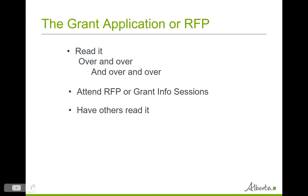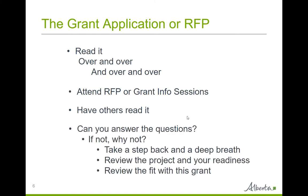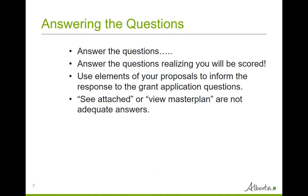Another strategy is, once you've written a draft, get someone else to proofread it and give feedback. Can you answer the question in the grant application form or RFP? If not, why not? Take a step back and a deep breath. Review the project and your readiness. Review the fit with this grant. Grant writers can use elements of their proposals they prepared earlier to apply for grants. Make sure to always operate under the assumption the funder knows nothing about your organization or project or initiative. Don't make them hunt for the information — this is truly annoying for a grant reviewer. Remember, they're reading multiple applications. While you may have beautifully bound professional printed proposals, the funder is still going to be scoring you on the answers to the grant application questions or based on the criteria outlined in the request for proposal. So you have to give them what they want and in the format they ask for it.